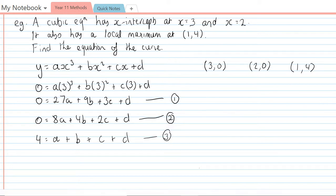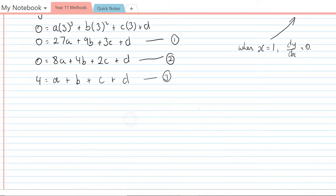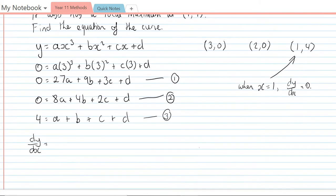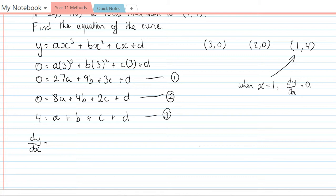What this means is that when x equals 1, the derivative is equal to 0. Luckily for us we can get an equation for the derivative. So dy/dx, if I differentiate the original equation, should be 3ax² + 2bx + c.